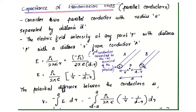Dear students, at the topic: capacitance of transmission lines or parallel conductors. Consider two parallel conductors with radius a separated by distance d.